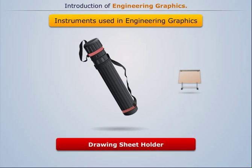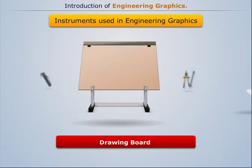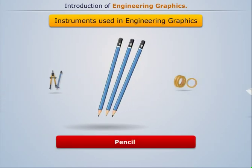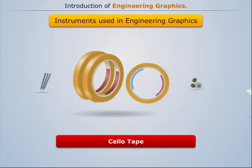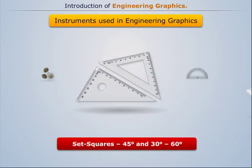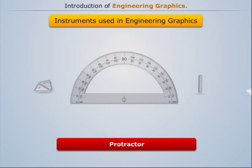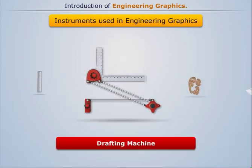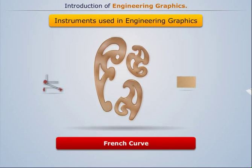A sheet holder, a drawing board, a large sized compass, pencils, tapes, drawing pins, set squares, protector, scale, mini drafting machine, French curves, and sandpaper.